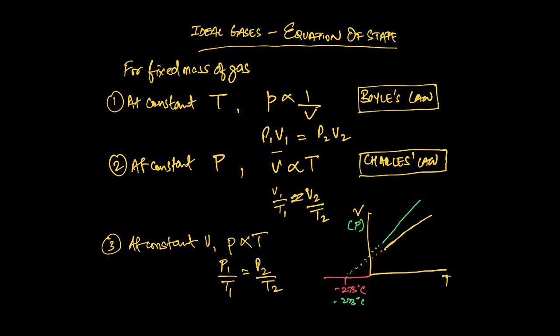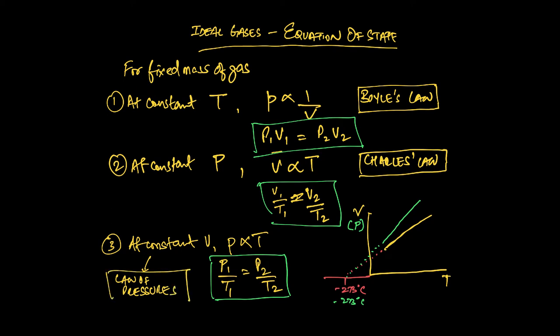So now that we have a bunch of things here, we have this formula here, we have this formula here, and we have this formula here. And I apologize, I should actually write this out. As I was saying, this right here is called law of pressures. So you have Boyle's, Charles, and law of pressures. So you have these three very interesting relationships. Can we combine them into one equation? It's a little bit cumbersome to look at all three together. Can we combine them into one? Well, it turns out we can. So let's take a look.